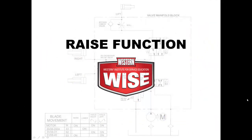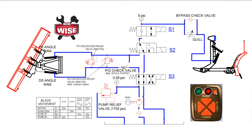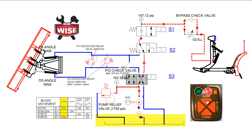We will now demonstrate the raise function. We will now turn the cab control on. The red indicator light illuminates and should remain a constant red light. We are now ready to function our plow. Pressing the raise button on the cab control activates the motor, turning the pump, drawing hydraulic fluid from the tank, through the filter, creating flow.